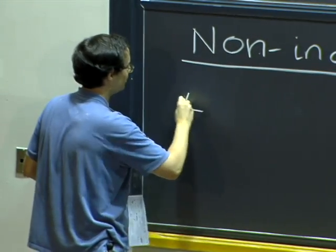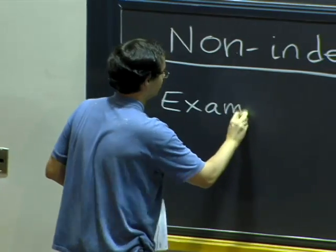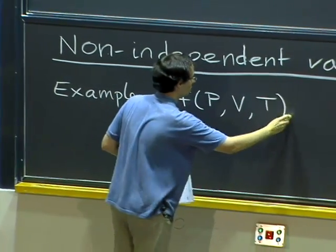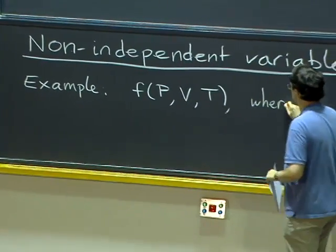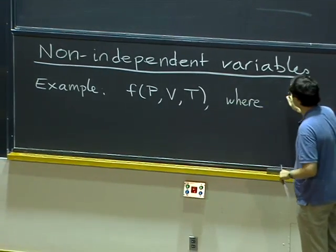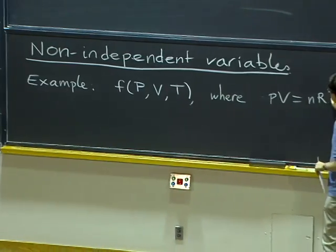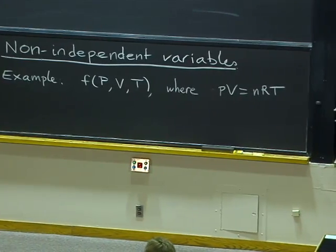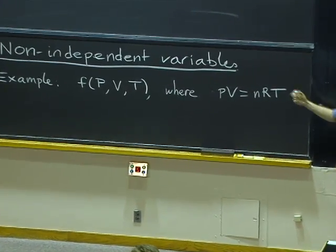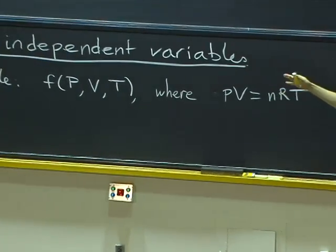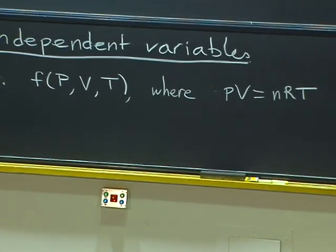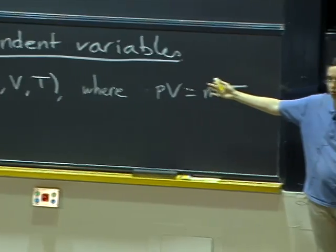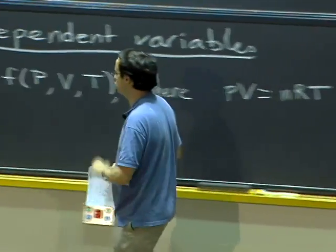Just to give you an example, in physics, very often you have functions that depend on pressure, volume, and temperature, where pressure, volume, and temperature are actually not independent, but they are related, say, by PV equals nRT. Of course, you can substitute and express the function in terms of two of them only. But very often it is convenient to keep all three. But then we have to figure out what the rates of change of P and V with respect to T are, and so we have to figure out what we mean by partial derivatives again.